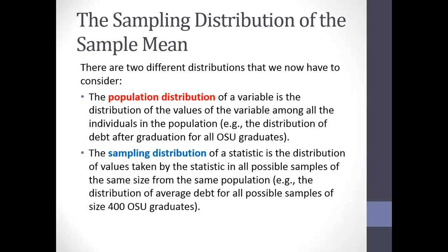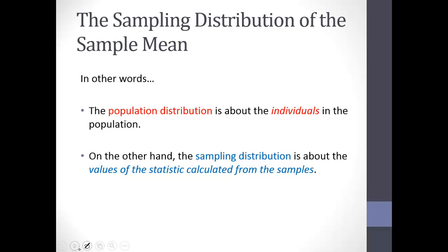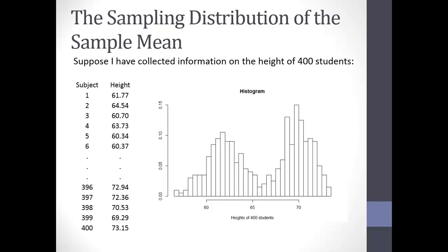On the other hand we have what's called a sampling distribution, which is the distribution that the sample average would take over all possible samples. For example, suppose these 400 students are my population — here my population isn't that big — and for each of these 400 people I've asked their height and made a histogram of their heights. That's what we looked at at the end of Friday's class.